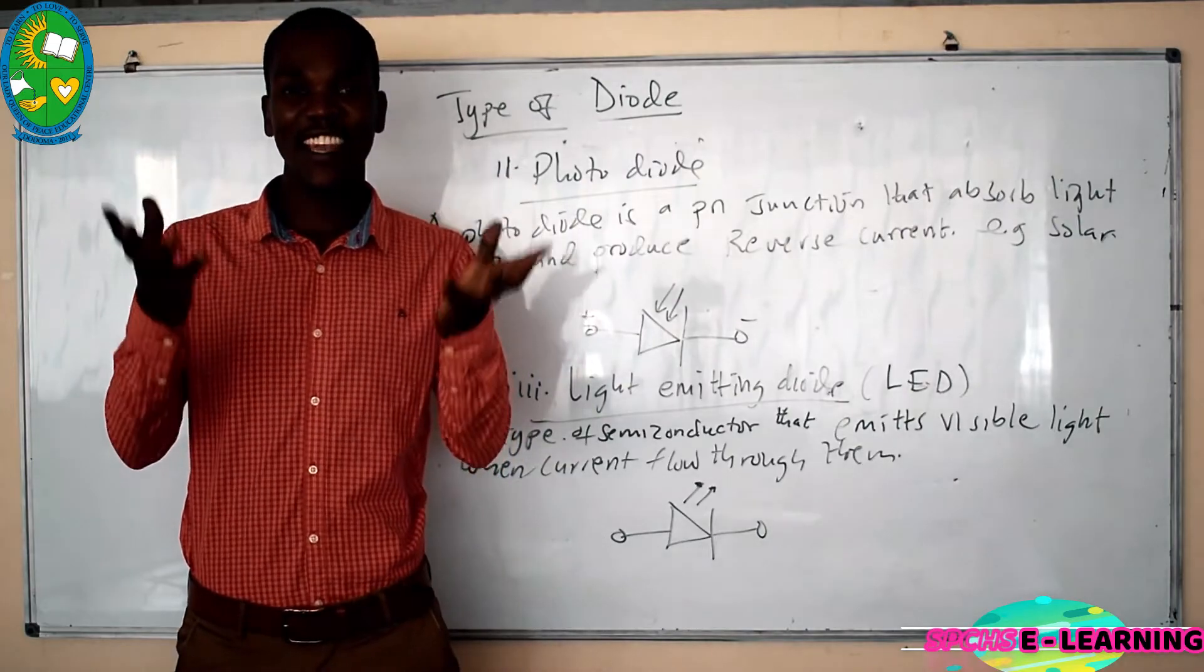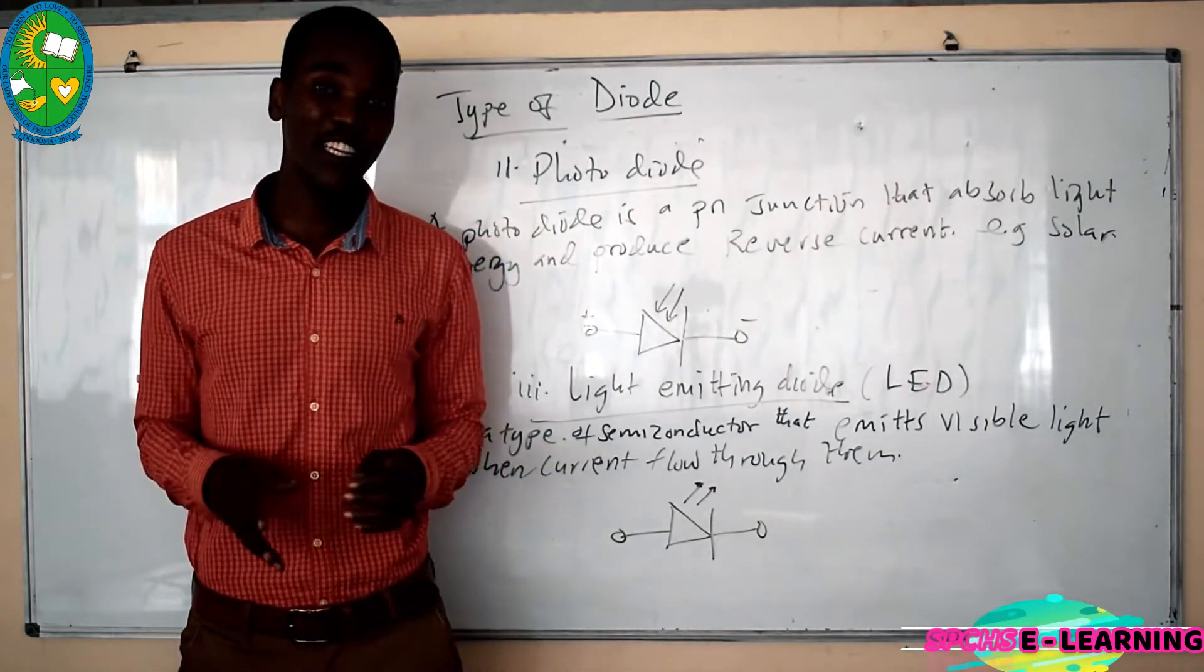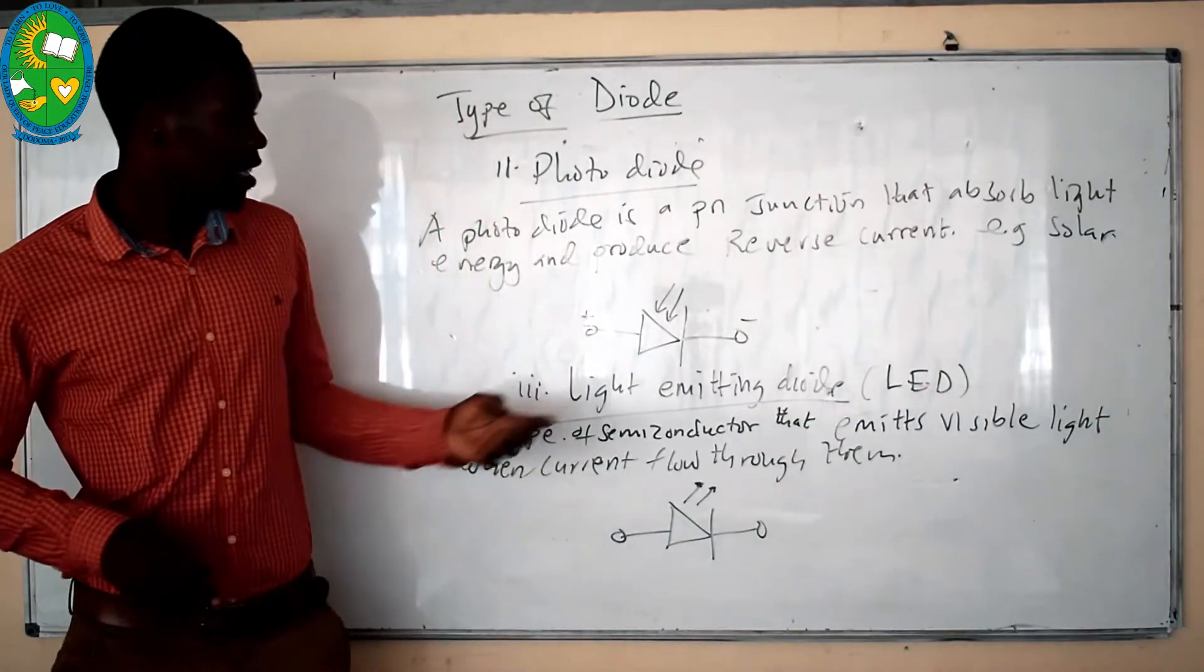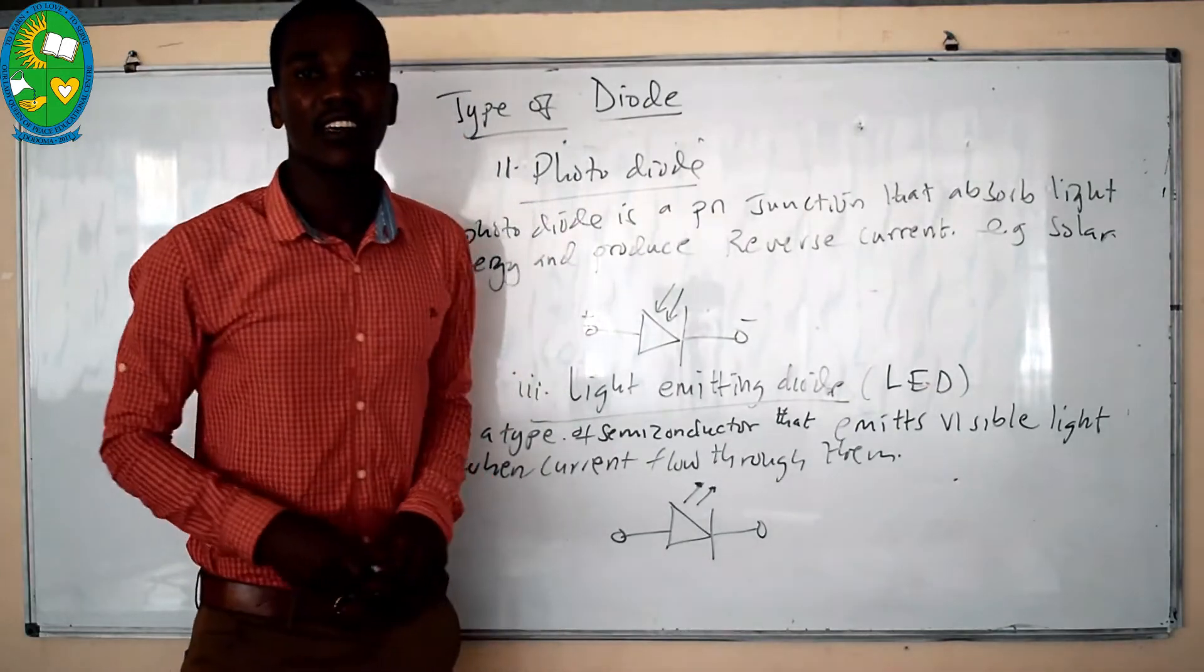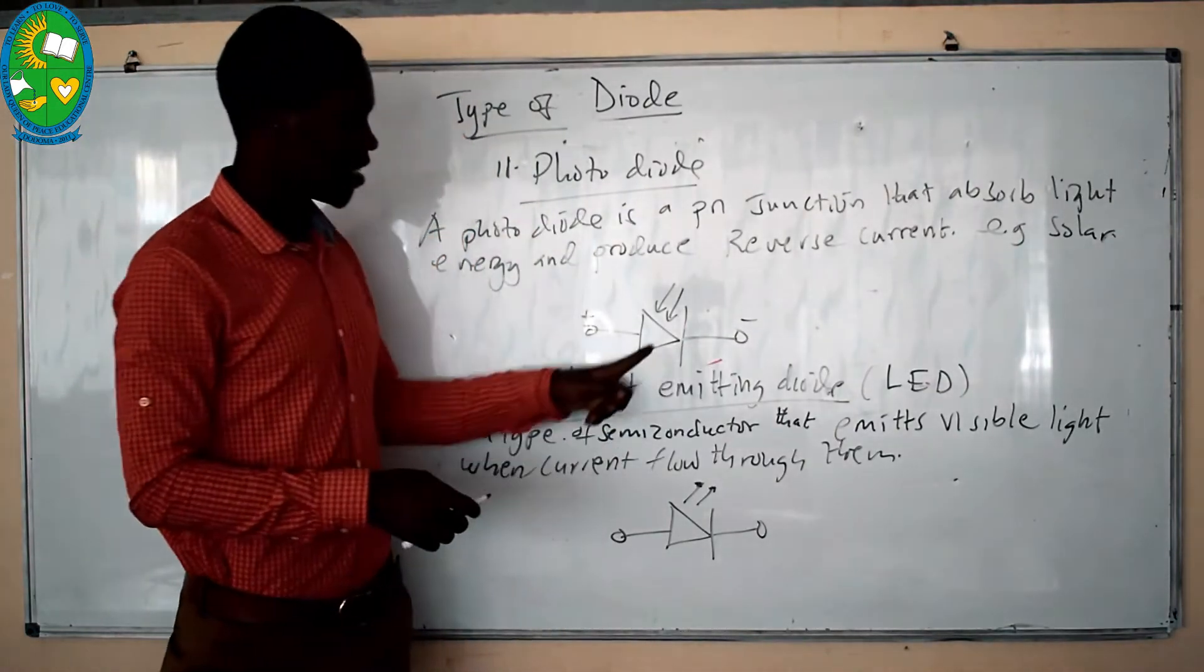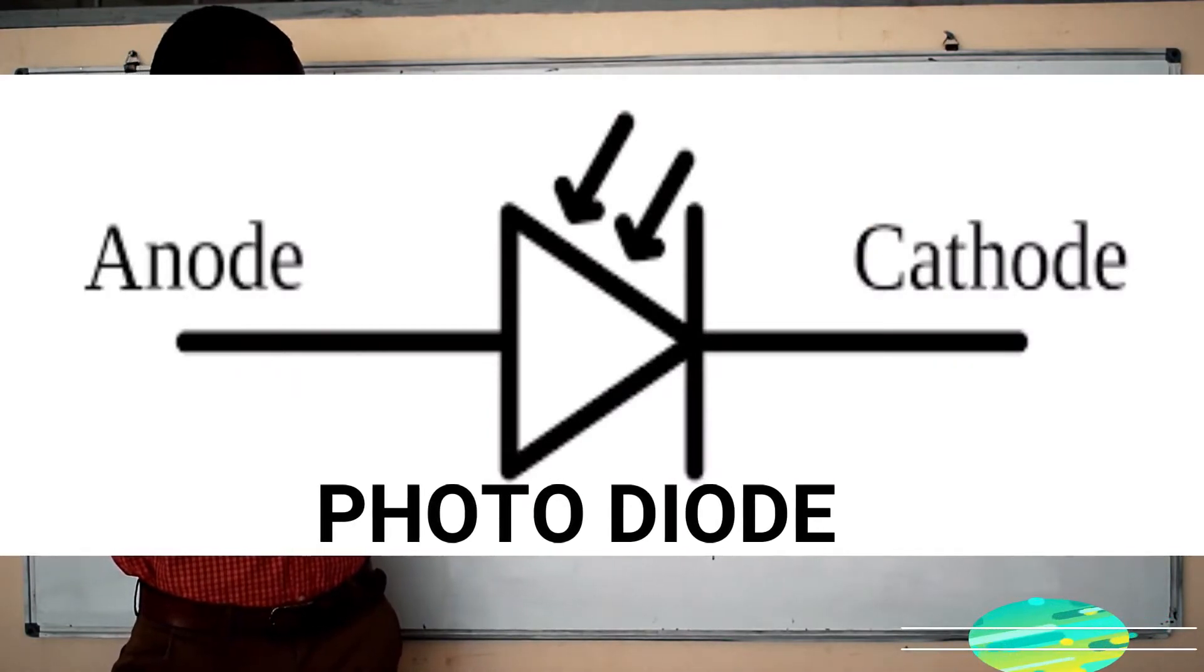Because it converts the light which is falling from the sun into a current which is stored into solar cells. The symbol for photodiodes is like this, including lines which show arrows of light entering in them.